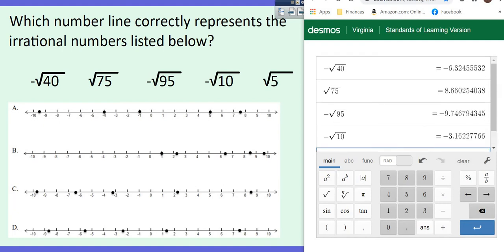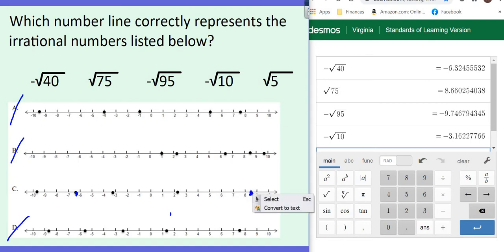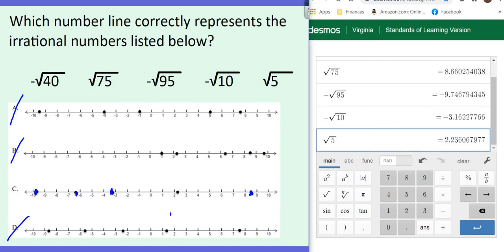So let's go up and look at all of these. So we've got negative 6.3. Let's look for that one. There is no negative 6.3 on A, so we're getting rid of that. There is not one on B. There is one on C. And it's right here, 6.3. And then there's not one on D. But let's go ahead and check the rest of C to make sure. We need an 8.66, which is right there. We need a negative 9.7, which is right here. We need a negative 3.2, which is right there. And then finally, we need a 2.2, which is right there.